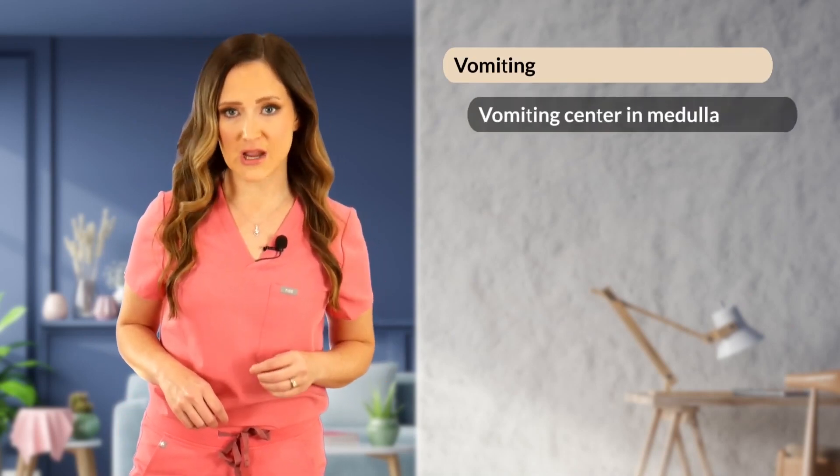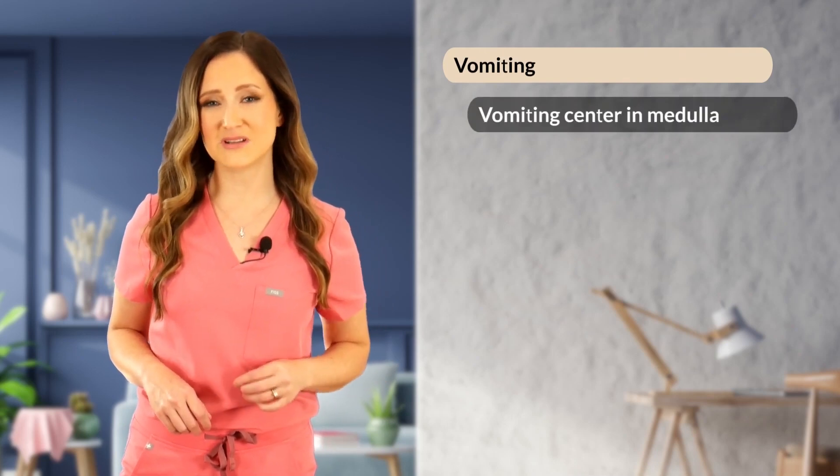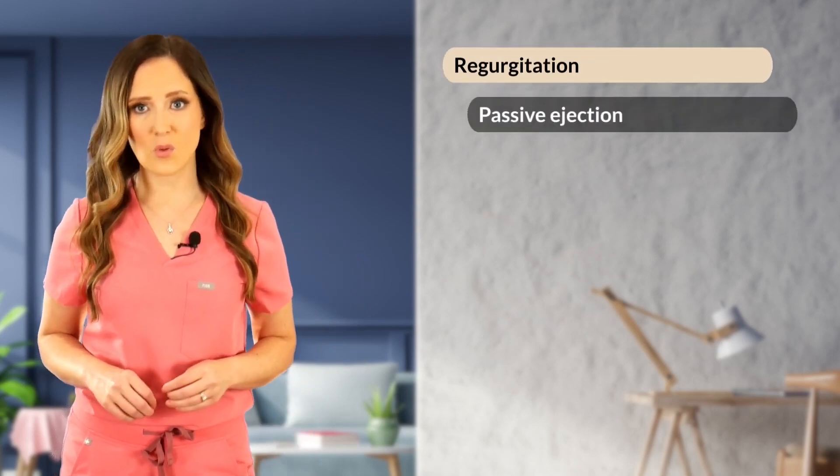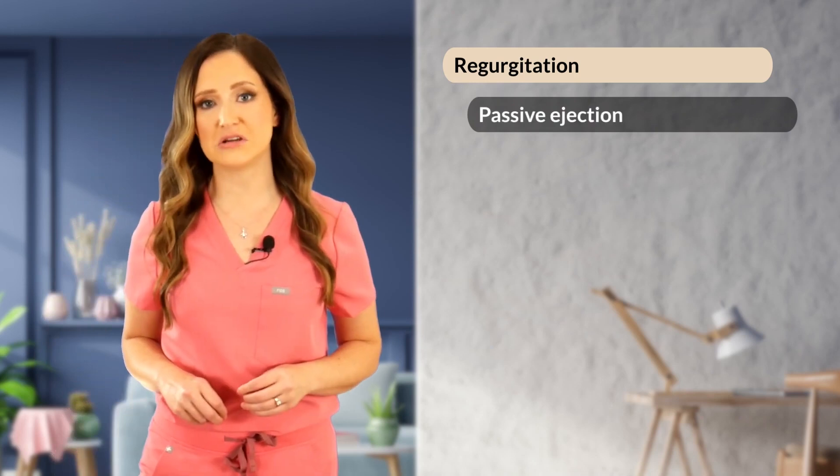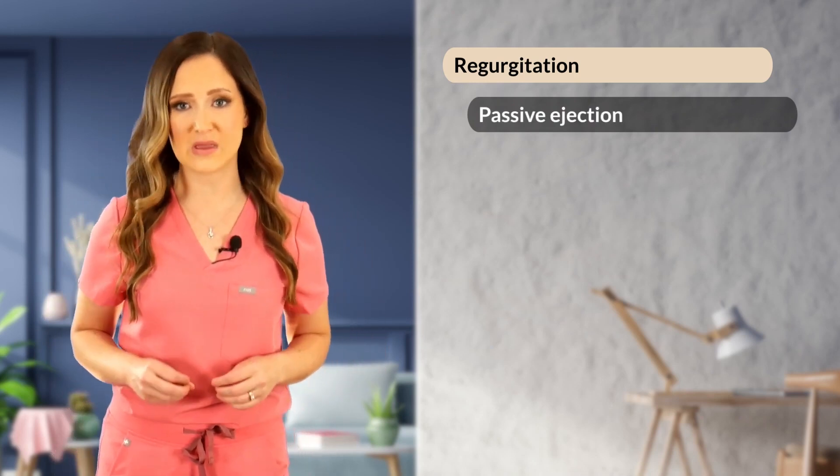We want to differentiate vomiting from regurgitation anytime we have a patient with vomiting come in, as these two conditions can sometimes be easily misinterpreted by owners. Vomiting is the forceful ejection of upper GI tract contents and may occur as a result of gastric, intestinal, or systemic disease. To differentiate between the two, we want to ask the owner if there was active abdominal contractions and any evidence of bile inside the vomitus — if so, you have a vomiting patient.